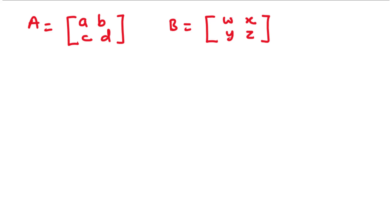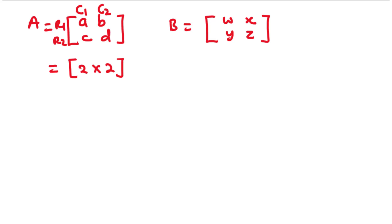The order of matrix A is 2×2 simply because it has two rows and two columns. Also, the order of matrix B is 2×2 — it also has two rows and two columns.